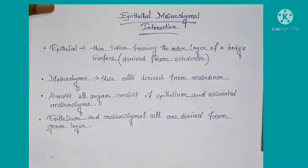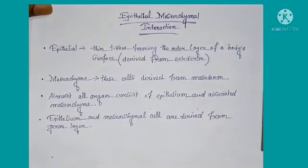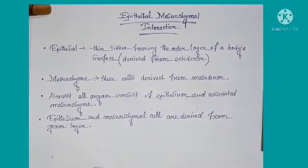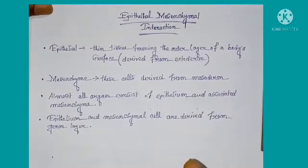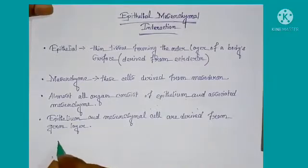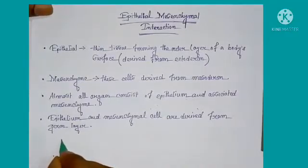Epithelial refers to a layer related to the embryonic germ layers. During the gastrulation process, the movement of cells takes place within the embryo and three germ layers are formed: the ectoderm, endoderm, and mesoderm.